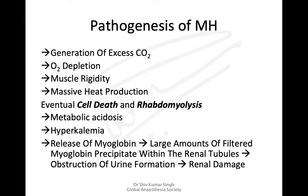In MH, there is excess carbon dioxide generation, increased oxygen utilization leading to oxygen depletion, and anaerobic metabolism sets in. There is muscle rigidity and massive heat production. If this continues, it can lead to cell death and rhabdomyolysis, severe metabolic acidosis, and the muscle releases large amounts of potassium and myoglobin. The myoglobin is filtered through the kidney where it can precipitate, obstruct tubular formation, and cause acute renal failure.